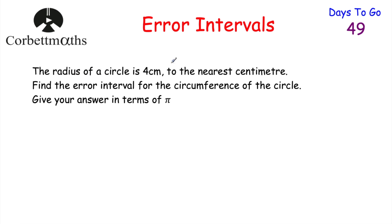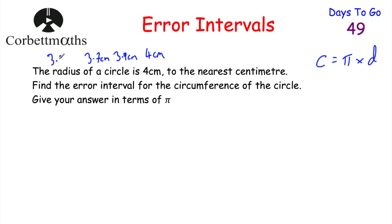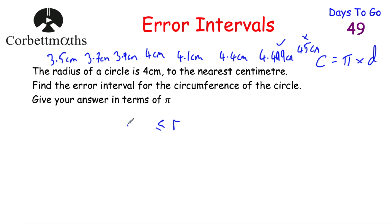Our last question: the radius of a circle is 4 centimetres to the nearest centimetre. Find the error interval for the circumference of the circle, giving your answer in terms of π. This is a non-calculator question, so put your calculator down. The radius could be exactly 4 cm, 3.9 cm, 3.7 cm, or as low as 3.5 cm — but nothing below. So the radius is greater than or equal to 3.5 cm. Above 4 cm it could be 4.1, 4.4, or 4.499 cm, but not 4.5 cm as that rounds up to 5. So the error interval for the radius is: 3.5 ≤ r < 4.5 centimetres.